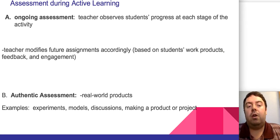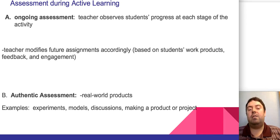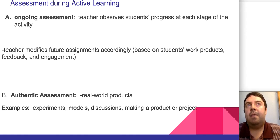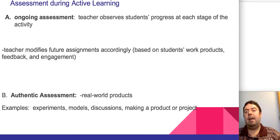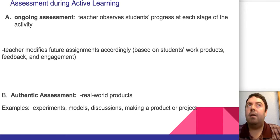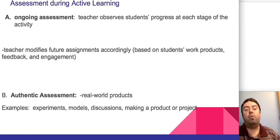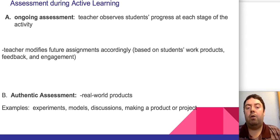Another important element is to provide authentic assessment. Authentic assessment is a great way to have students evaluated on their learning in a fun, meaningful way. An authentic assessment could be a real-world product — having students demonstrate an experiment and turn in a lab report, create a model, have a discussion, create a digital project, or create an art project like a song or rap. These assessments relate to things students could do in the real world, and they're also fun and engaging ways to ensure students are understanding the concepts.